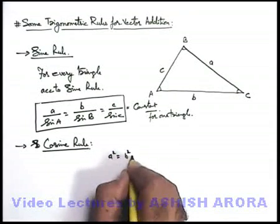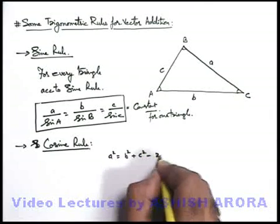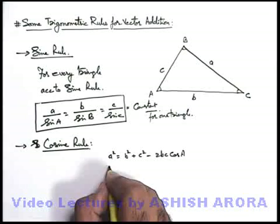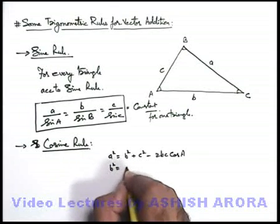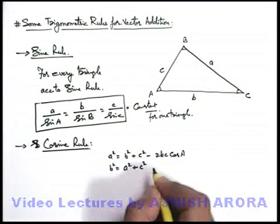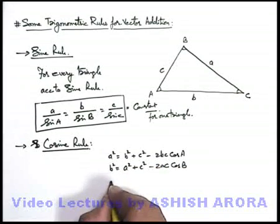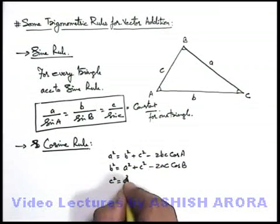a squared is equal to b squared plus c squared minus 2bc cos A, and b squared is equal to a squared plus c squared minus 2ac cos B. Similarly c squared is equal to a squared plus b squared minus 2ab cos C.